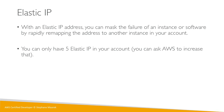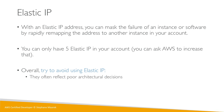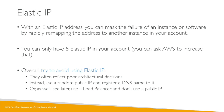You can only have five Elastic IPs in your account by default, though you can ask AWS to increase that. Overall, I recommend avoiding Elastic IPs — they often reflect poor architectural decisions. Instead, use a random public IP and assign a DNS name to it using Route 53, or better yet use a load balancer and avoid using a public IP at all, which is the best pattern in AWS.